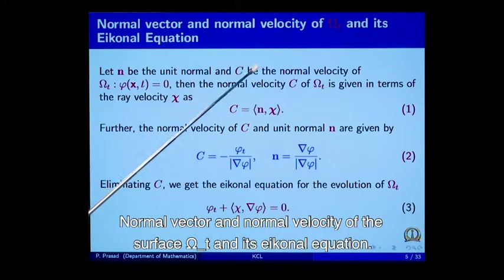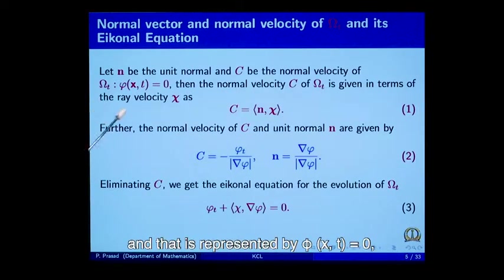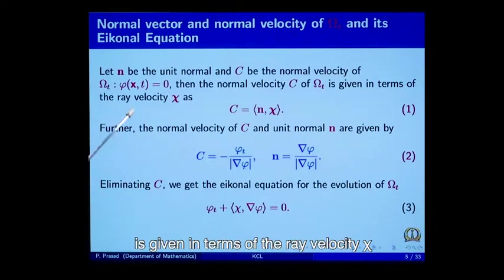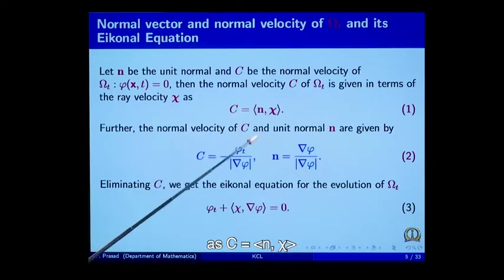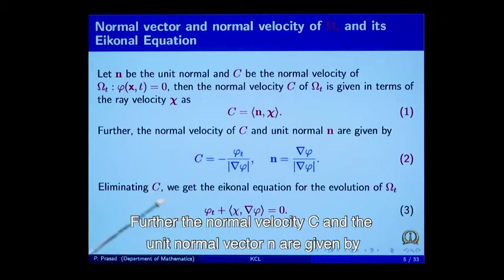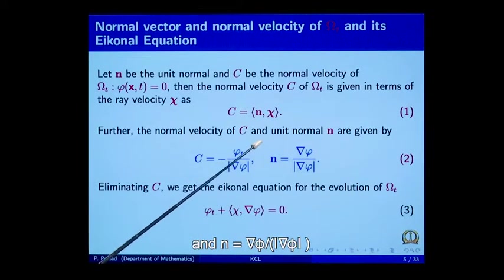Normal vector and normal velocity of the surface omega t and its iconal equation. Let n be the unit normal and c be the normal velocity of the surface omega t, represented by phi(x, t) = 0. Then the normal velocity c of omega t is given in terms of the ray velocity chi as c equal to the inner product of n and chi. Further, the normal velocity c and the unit normal vector n are given by c = -phi_t / |grad phi| and n = grad phi / |grad phi|.